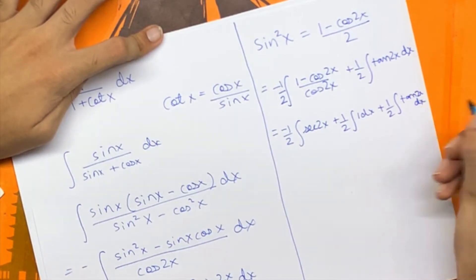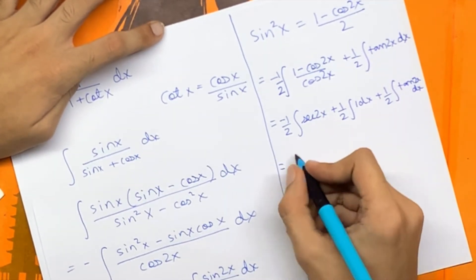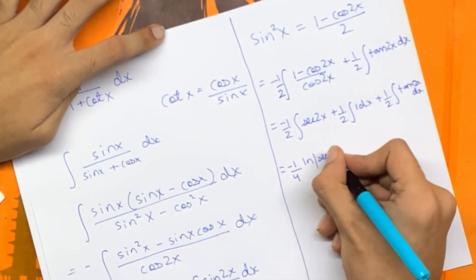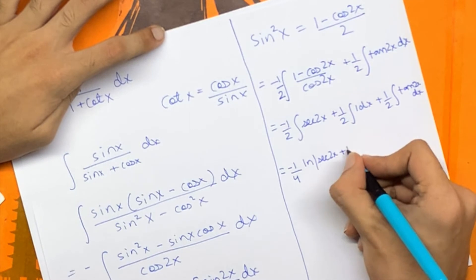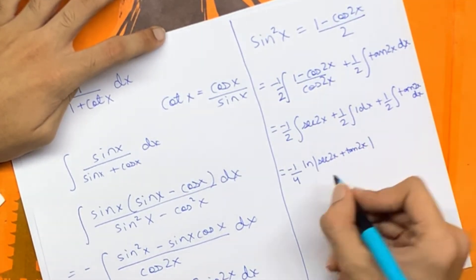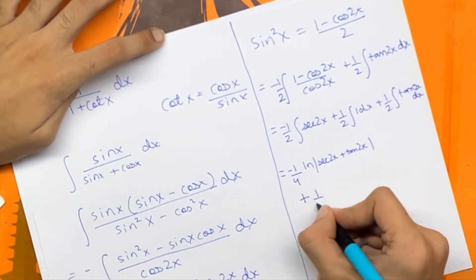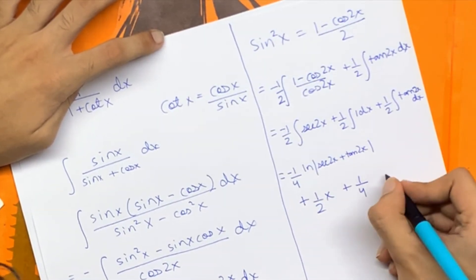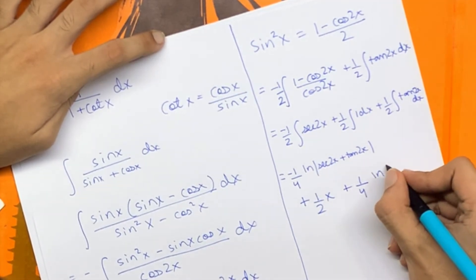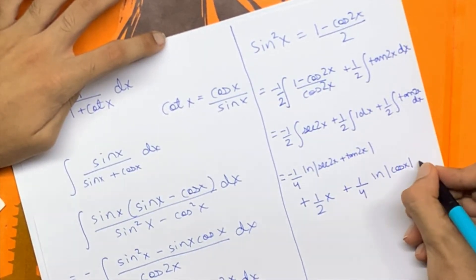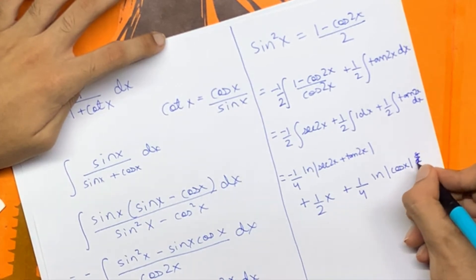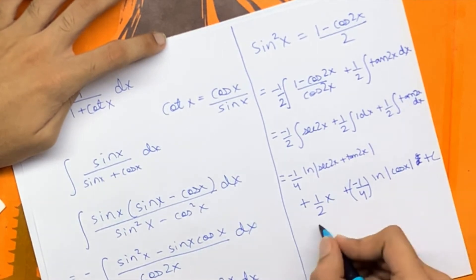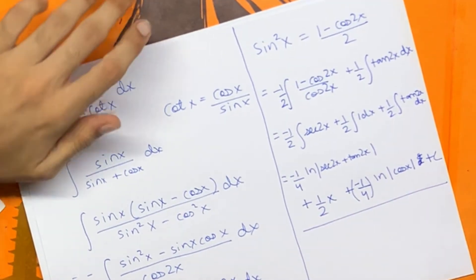And we have our answer: minus 1 by 4 times the natural log of sec 2x plus tan 2x, plus half times x, minus 1 by 4 times the natural log of cos x plus c. It has to be minus — sorry for that. And that is the answer to the second integral.